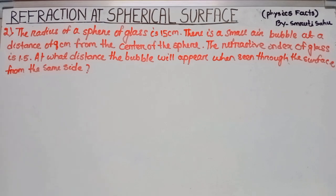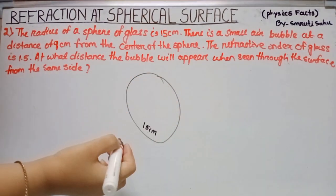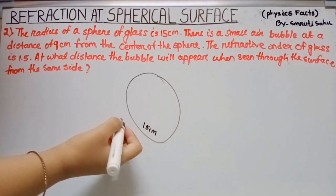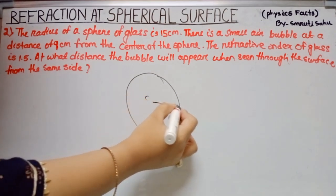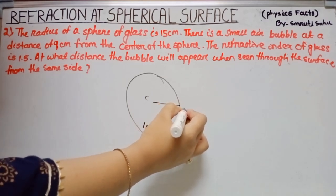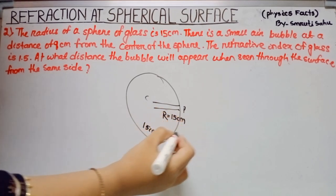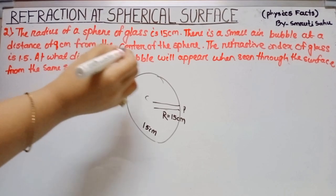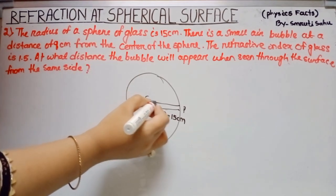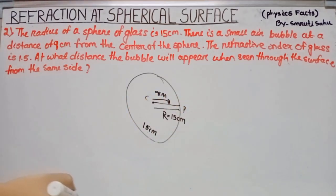The radius of a sphere of glass is 15 cm. There is a small air bubble at a distance of 9 cm from the center of the sphere. The center is marked and this distance is the radius of curvature — that is 15 cm. The air bubble is present at 9 cm from the center. The refractive index of glass is 1.5.